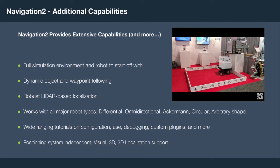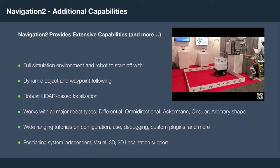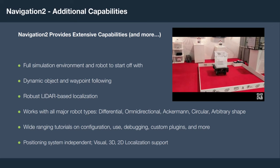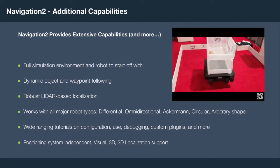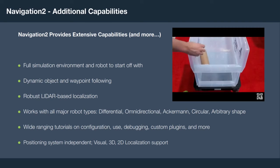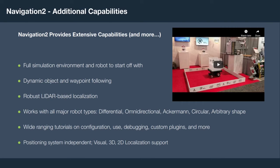Navigation 2 has a number of additional capabilities, including full simulation environments and a robot to start off with, so you can get started immediately after downloading the code. We also have dynamic object and waypoint following, a robust LiDAR-based localization system out of the box, and it works with all major robot types including differential drive, omnidirectional, and Ackermann steering of any shape. We have a wide range of tutorials on configuration, use, debugging, and custom plugins. It is positioning system independent, so you can use any vendor from visual 2D or 3D localization, as well as GPS navigation.